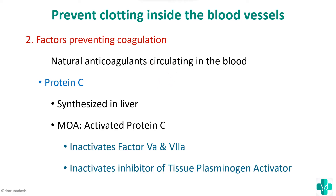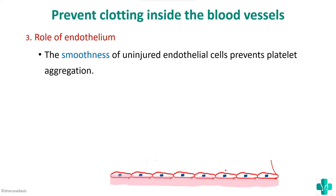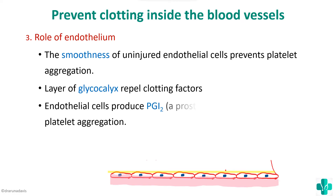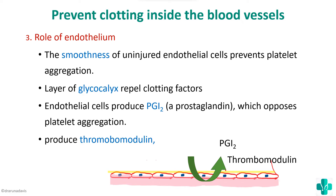The role of the endothelium in preventing coagulation: first, the smoothness of uninjured endothelial cells itself prevents platelet aggregation. Second, there is a layer of glycocalyx that repels clotting factors due to its negative charge. Third, endothelial cells produce PGI2, a prostaglandin that opposes platelet aggregation. The endothelium also produces thrombomodulin, which plays an important role in the fibrinolytic system.